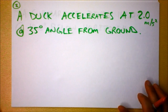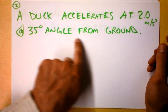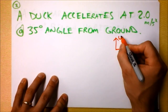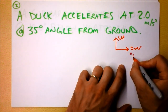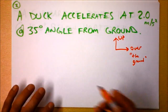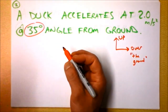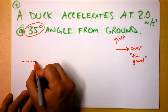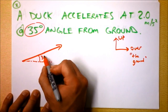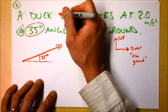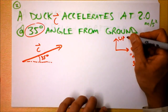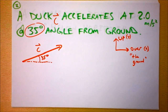We'll do this next one a little faster because we're getting good at this. A duck accelerates at 2.0 meters per second squared at a 35-degree angle from the ground. I'm going to draw my coordinate system with up and over, since 'over' represents the ground. I'll choose the duck accelerating upward. I'll mark 35 degrees measured from the horizontal, draw vector C, and declare the vertical direction as y and the horizontal as x.